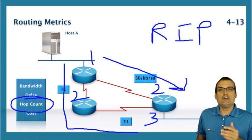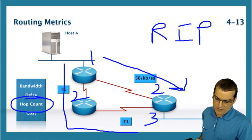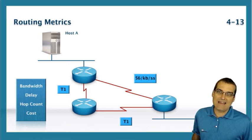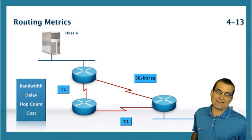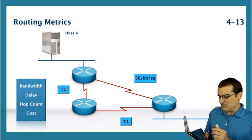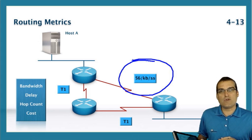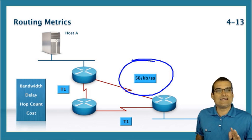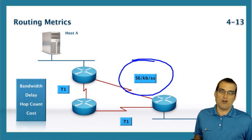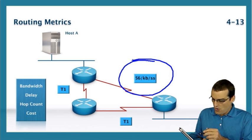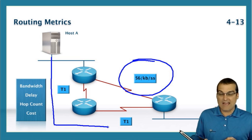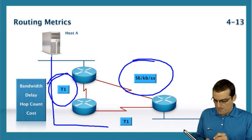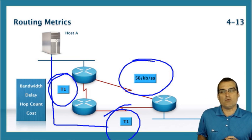The issue with this, notice the bandwidth values displayed in this particular topology. This hop that RIP would prefer has the very slow bandwidth of 56k, while this path from Host A to Host B offers a much preferential bandwidth.